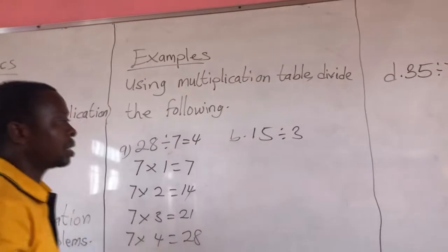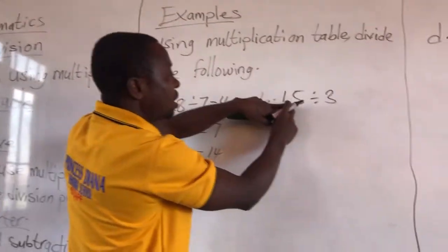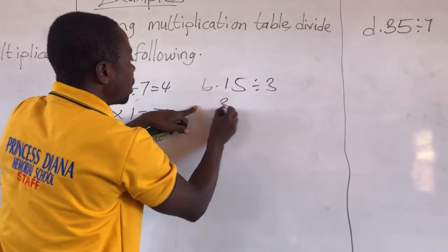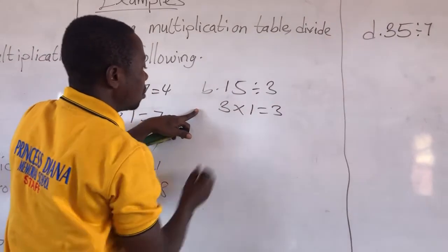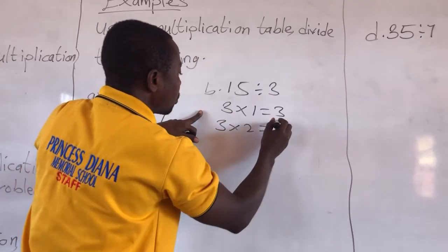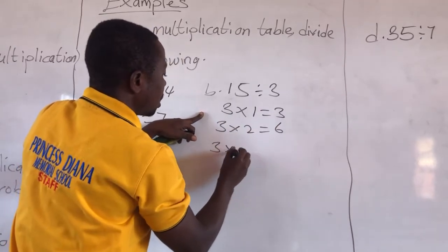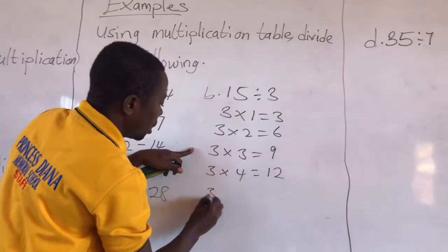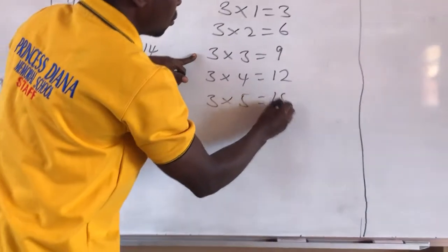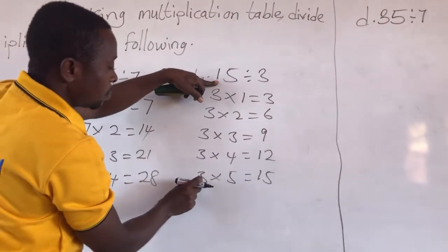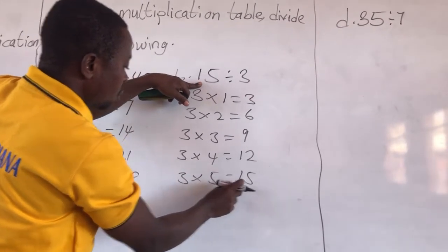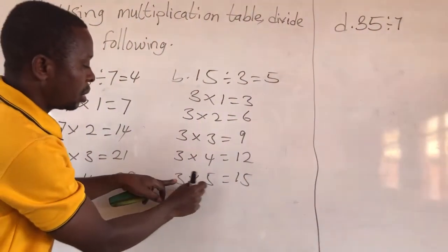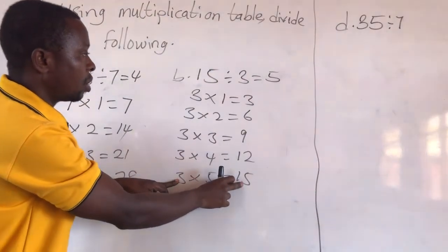Now let's look at the next example. The dividend is 15 and the divisor is 3. So we are using the 3 times table. 3 times 1 is 3, 3 times 2 is 6, 3 times 3 is 9, 3 times 4 is 12, 3 times 5 is 15. We get our dividend which is 15. So 15 divided by 3, using the multiplication table, gives us 5.